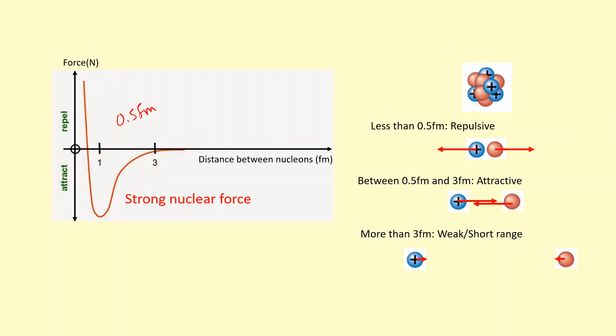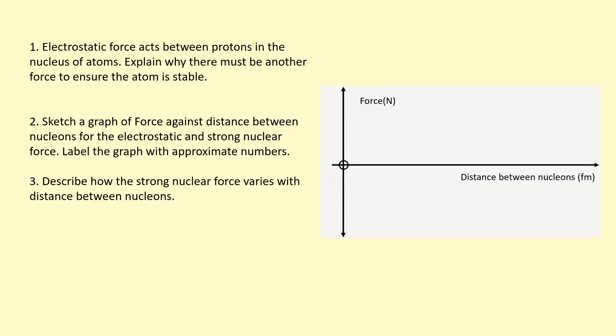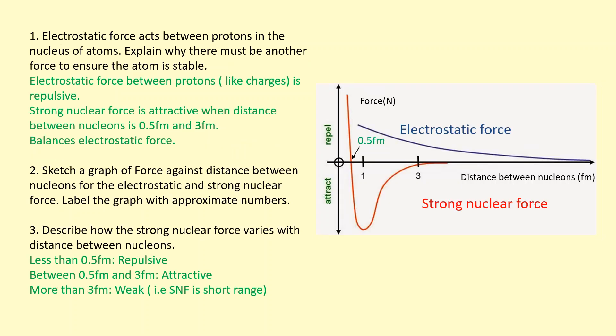So the balance of these two forces - the electrostatic force and the strong nuclear force - keeps the nucleus stable. But not all nuclei. If the nucleus is too large and the distances between the nucleons becomes very large, you can see the electrostatic force is going to win over. So that means the nucleus is going to start falling apart. It won't be stable. So this is why large nuclei tend to become unstable.